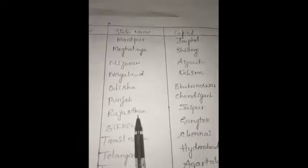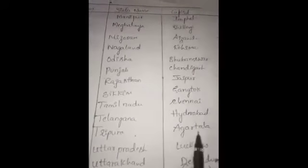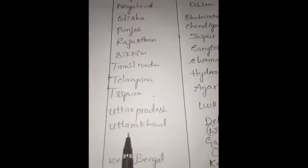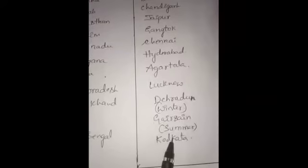Punjab state's capital is Chandigarh. Rajasthan state's capital is Jaipur — Jaipur is the capital of Rajasthan. Sikkim state's capital is Gangtok. Tamil Nadu state's capital is Chennai. Telangana state's capital is Hyderabad. Tripura state's capital is Agartala. Uttar Pradesh state's capital is Lucknow. Uttarakhand state's capital is Dehradun in winter and Gairsain in summer. And the last one, West Bengal's capital is Kolkata. So now we have seen the complete list of states and their capitals.